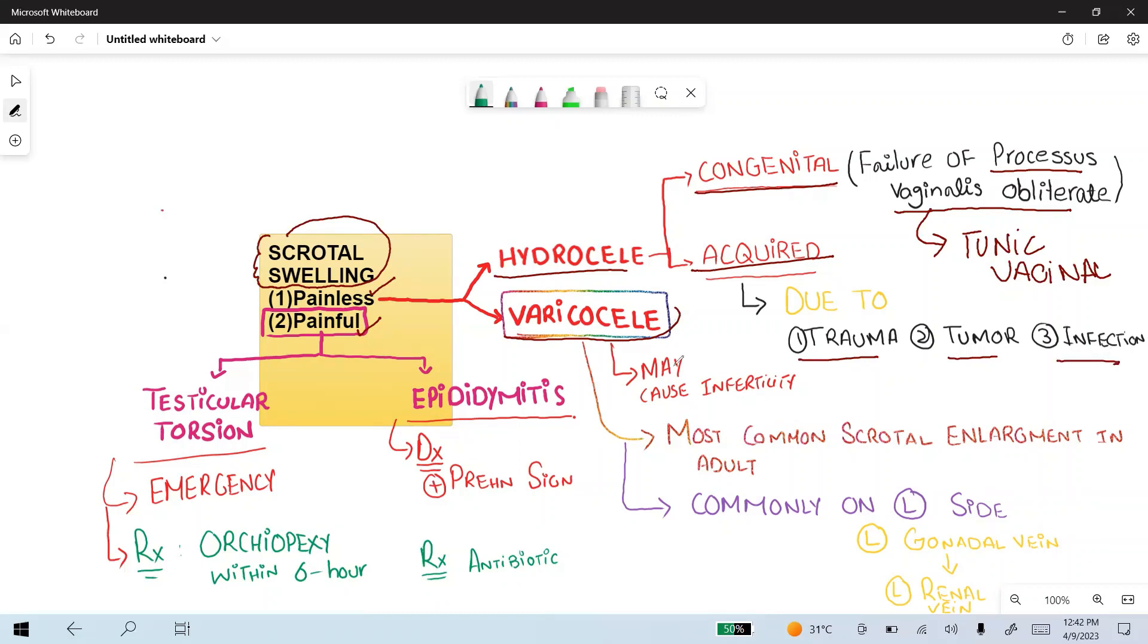Next is varicocele. Varicocele is the most common scrotal enlargement in adults and is most commonly on the left side because the left gonadal vein drains into the left renal vein. One important high-yield point related to varicocele: it may cause infertility.